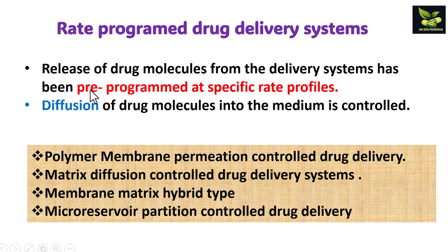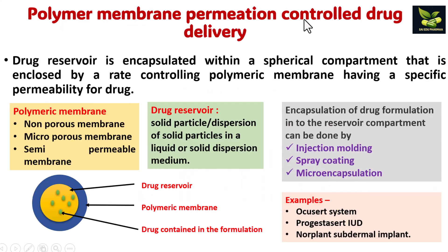Rate programmed drug delivery systems have pre-programmed drug release at specific rate profiles, where diffusion of drug molecules into the medium is controlled. There are four types: polymer membrane permeation control, matrix diffusion control, membrane matrix hybrid, and micro reservoir partition controlled. In polymer membrane permeation control, the drug reservoir is encapsulated within a spherical compartment enclosed by a rate controlling polymeric membrane with specific permeability for the drug.